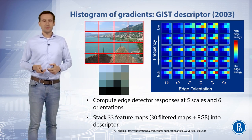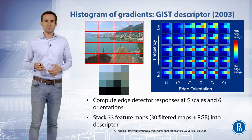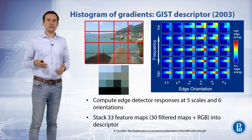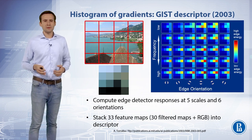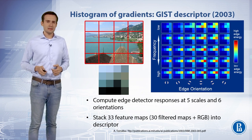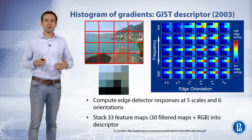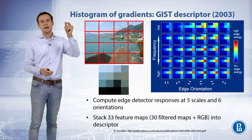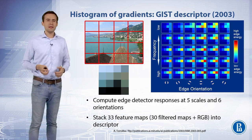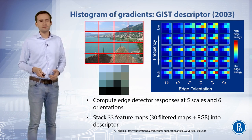Therefore, to describe the image as a whole, the GIST descriptor was introduced. It computes gradients in the image at a variety of scales via a pyramid of scales or Gaussian smoothing with different intensities. For each scale, histograms of gradients are concatenated to form a descriptor. To describe color information, one may use a color histogram or simple averaging of colors within blocks.